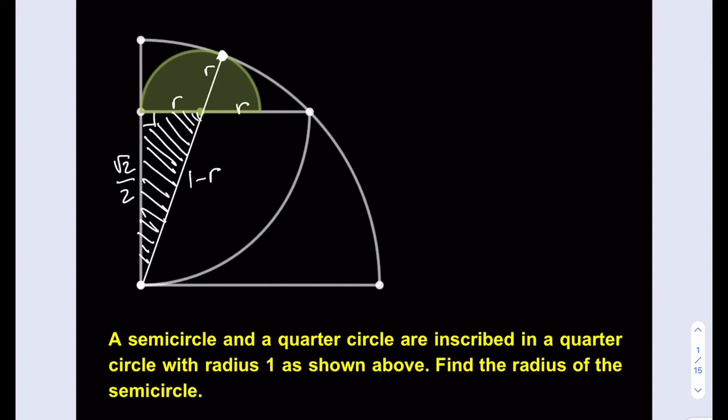Let's go ahead and use the Pythagorean theorem. So I have root 2 over 2 squared plus r squared equals 1 minus r quantity squared.